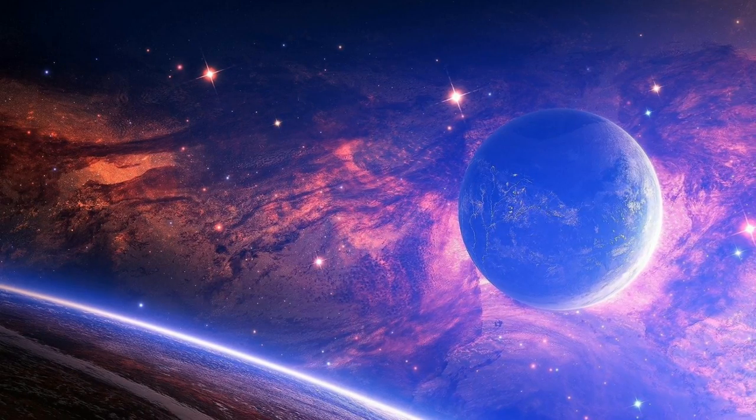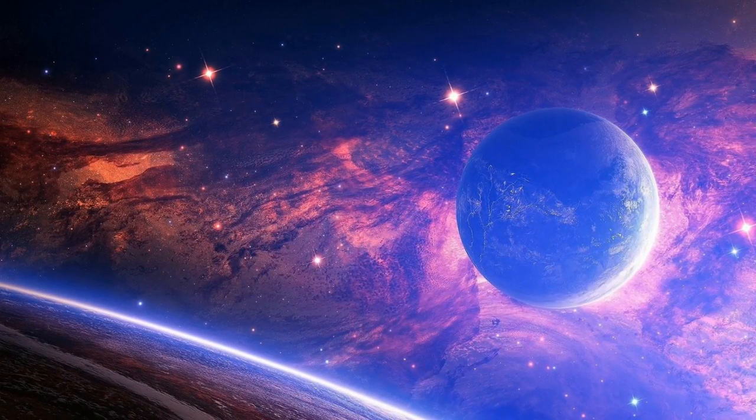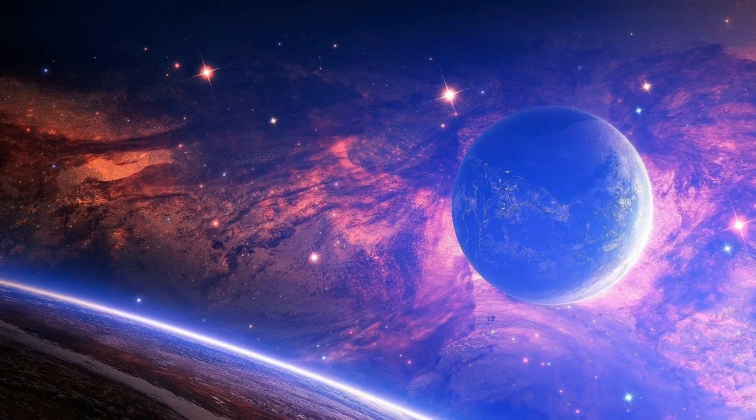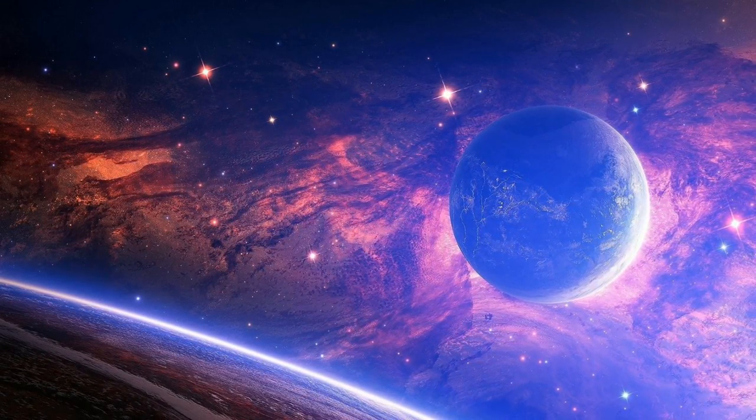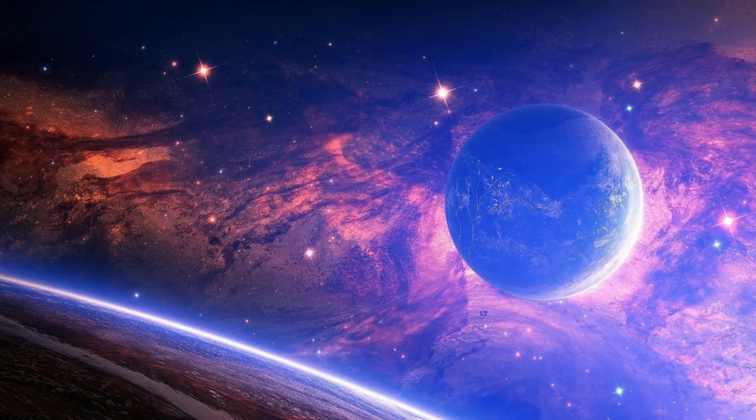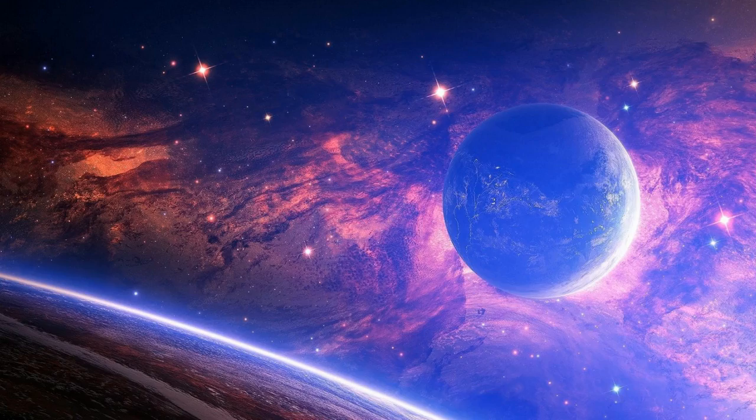Is there a super-Earth on the edge of our solar system? Astronomers believe they have discovered two of the most distant objects ever found in our solar system. One of the objects, they said, could be a super-Earth located six times farther away than Pluto.